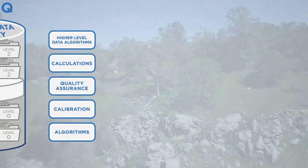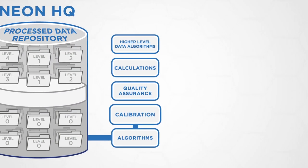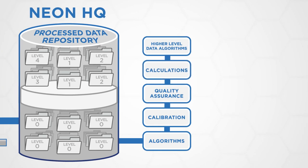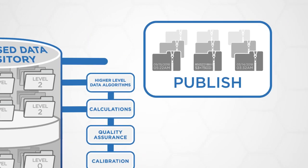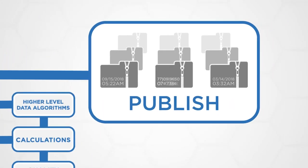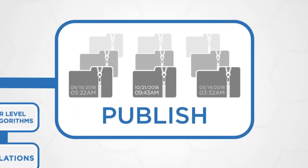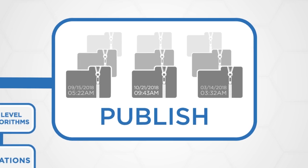These higher level data products are then sent back and stored in the process data repository. After the data are transitioned to higher level data products, another set of machine-readable instructions are used to publish the data. Data are formatted, compressed, and tagged with the publication date.